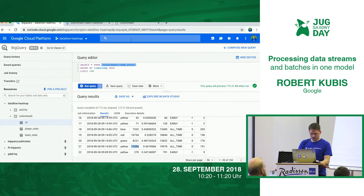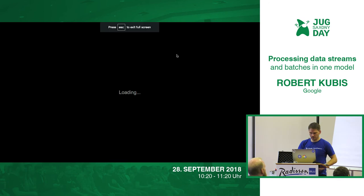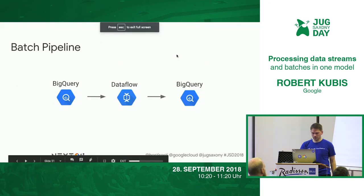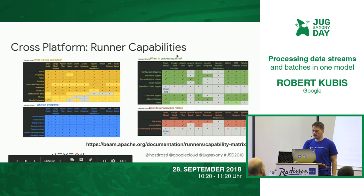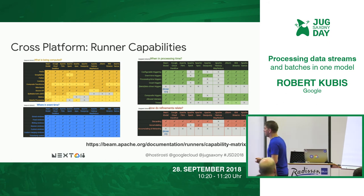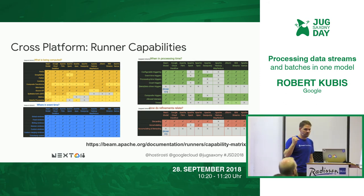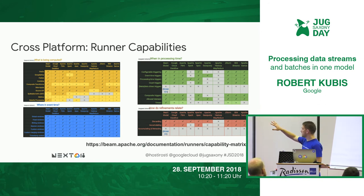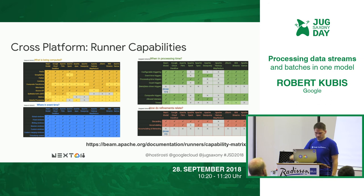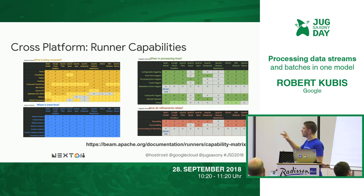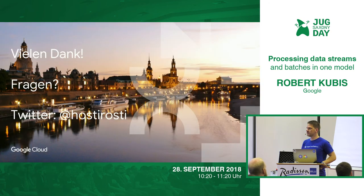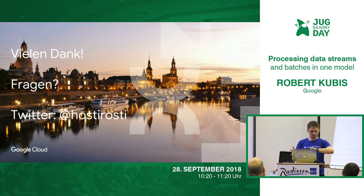That's the batch pipeline we just ran. If you want to find out which runners support the Apache Beam model, visit beam.apache.org and check the runner capability matrix. There are many runners now: Apache Flink, Spark, Apex, Gearpump, Hadoop MapReduce, Storm, IBM Streams, and Apache Samza — and many more. Thank you very much for your attention. Feel free to ask questions, and I'll also be around during lunch — I'll be the one with the red jacket with 'Developer Relations' on the back.